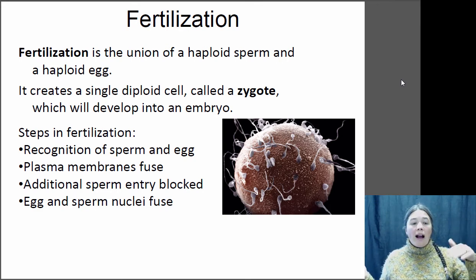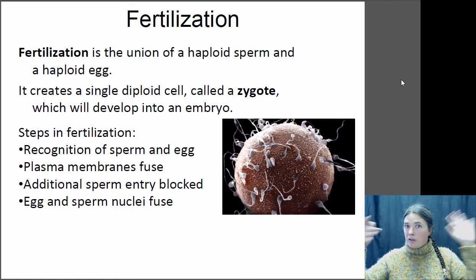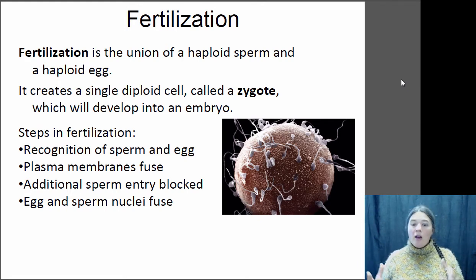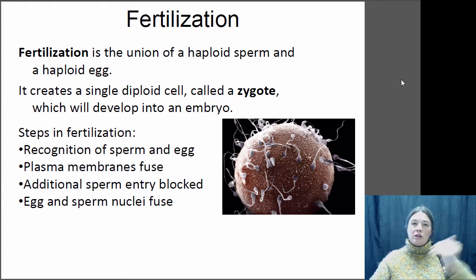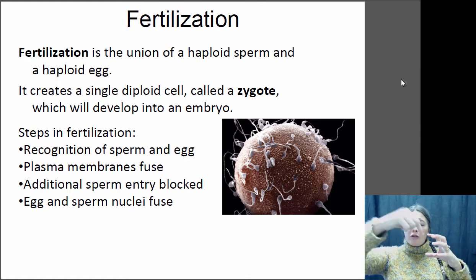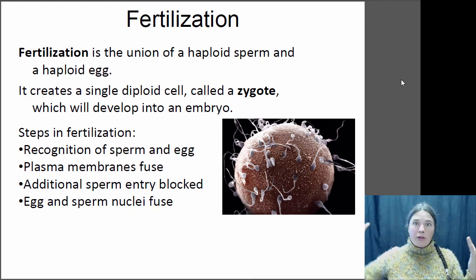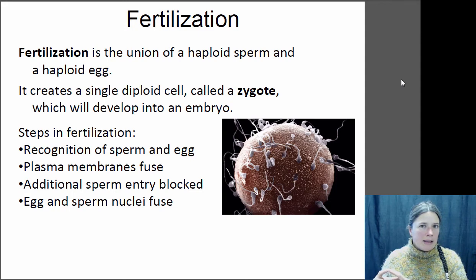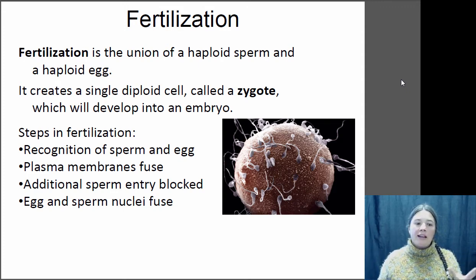When the sperm arrives, the egg has to recognize that this is an acceptable sperm. With external fertilization that's especially important — there's a lot of sperm floating around, and you don't want sperm from a different species to fertilize you, as it reduces your fitness. So there's a recognition that they're the same species. The plasma membranes fuse, and then any additional entry of other sperm has to be blocked. If another sperm enters, you now have three copies of the chromosomes — you're triploid. Triploids are generally sterile, so it's really bad to be fertilized by more than one sperm. You must block additional sperm from fertilizing the egg, and then the nuclei fuse within the cell.